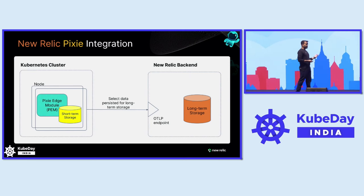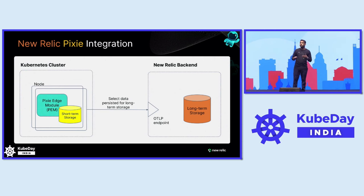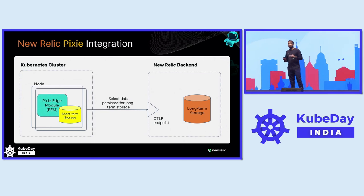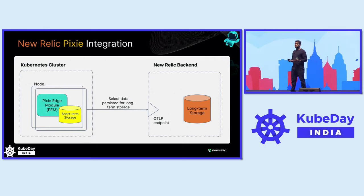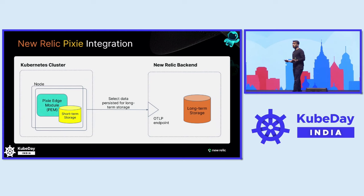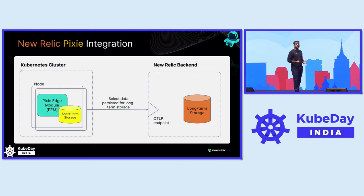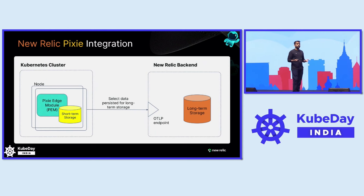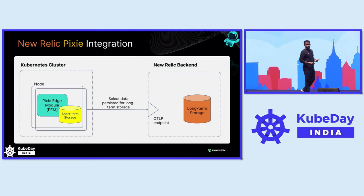This hybrid storage model allows you to actively debug your active Kubernetes incidents with the rich set of telemetry data available in memory, while also saving tons of cost by choosing to export only what telemetry data is going to be helpful to you for long-term storage.